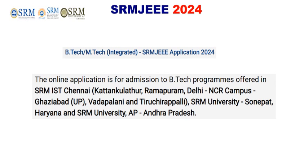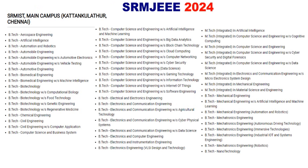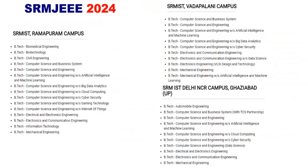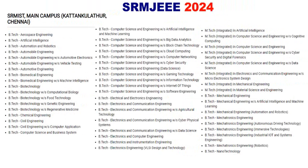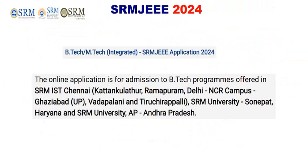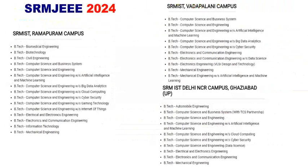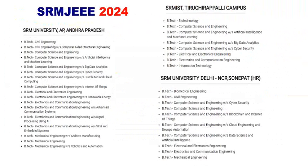Many students get confused here — SRM has multiple campuses. The main campus is at Ramapuram, and there are also campuses in AP. For BTech or integrated MTech courses, you should check the branches available at the main campus of Ramapuram. Some branches are only available at specific campuses.